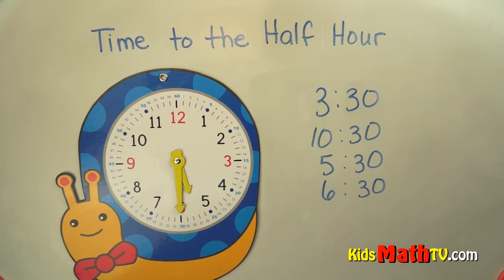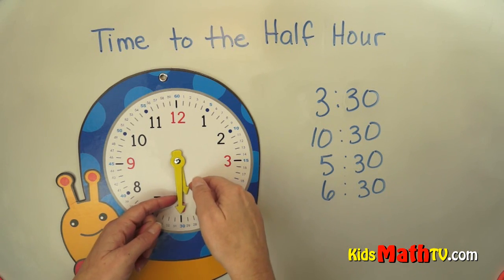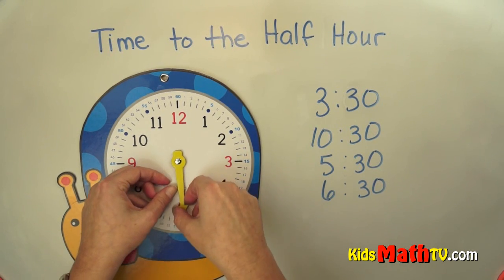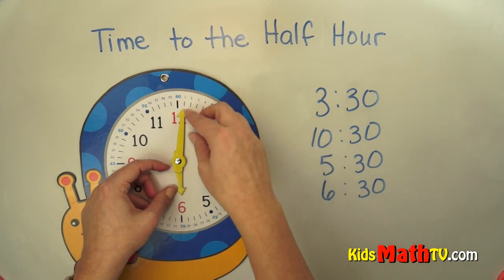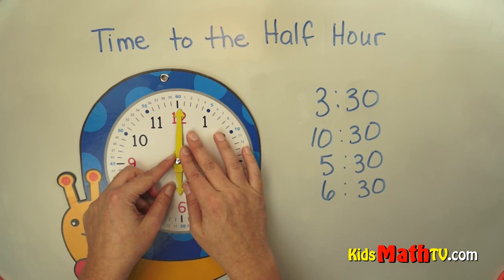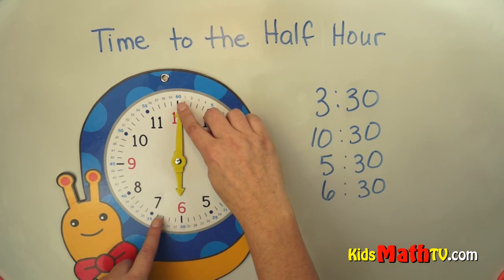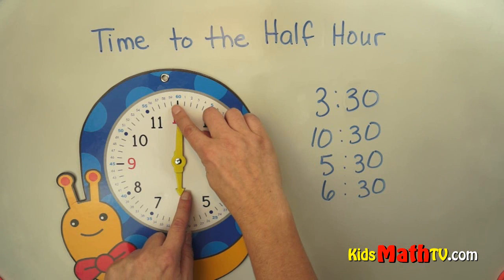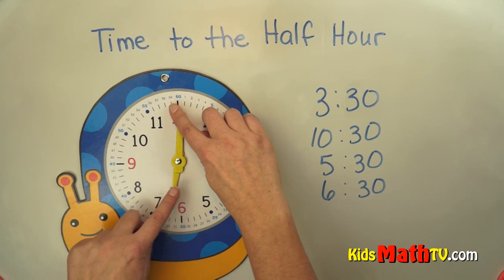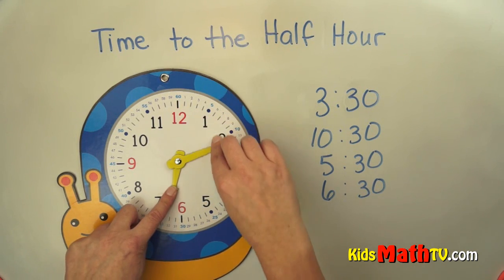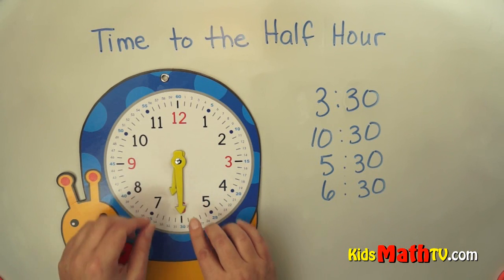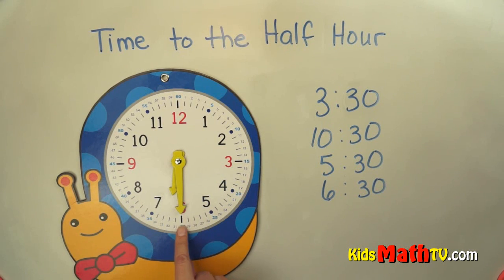6:30 is a little bit tricky because there's 6 o'clock straight up, and half past that would be halfway between 6 and 7. So the hour hand goes halfway between 6 and 7, and the minute hand is on the 30. That's 6:30, and that's the end of our lesson on time to the half hour.